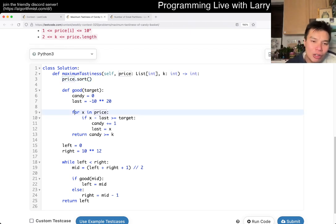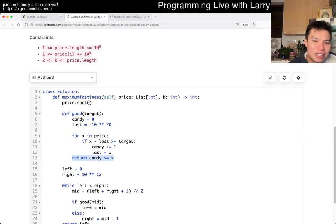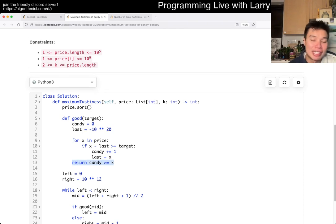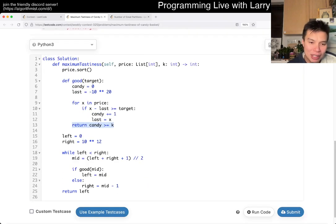After you sort it, you can just go through the prices. And yeah, if the current X and the last candy that you chose is bigger, so if the gap is big enough, then let's take this candy, and we set the last as you go to X. And then at the end, we just want to see how many candy we can have with this target as the gap. And if we have enough candies that are greater than K, then let's try a bigger gap to see if we can get a better tastiness, I suppose. That's pretty much it.